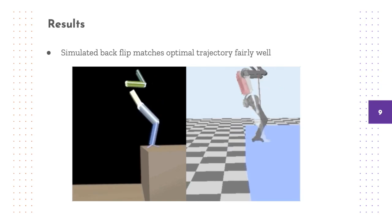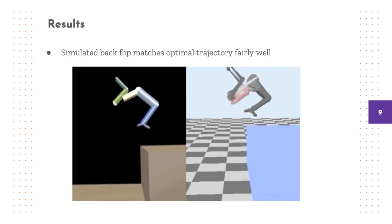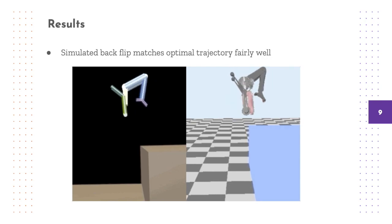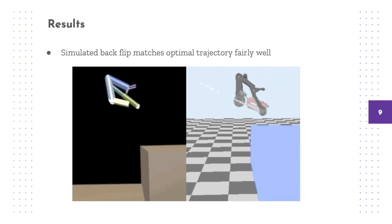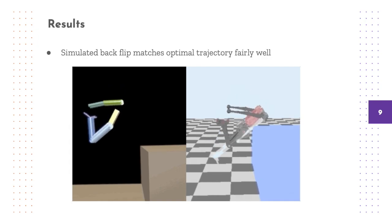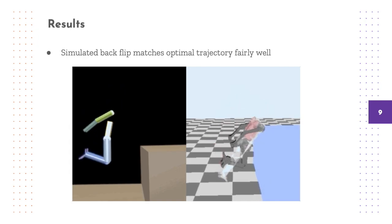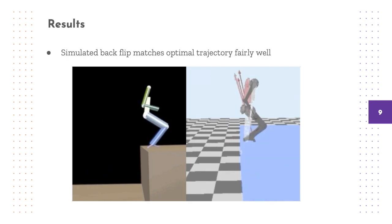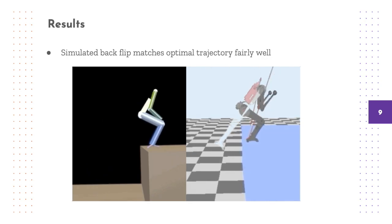This clip shows a slow-motion comparison of the optimized trajectory compared to the simulated trajectory. Considering the model simplifications made in the trajectory optimization, the two look remarkably similar. This indicates that the 2D approximation of the robot is a valid one. We note here that this level of fidelity was achieved with the simplest possible feedback tracking controller.